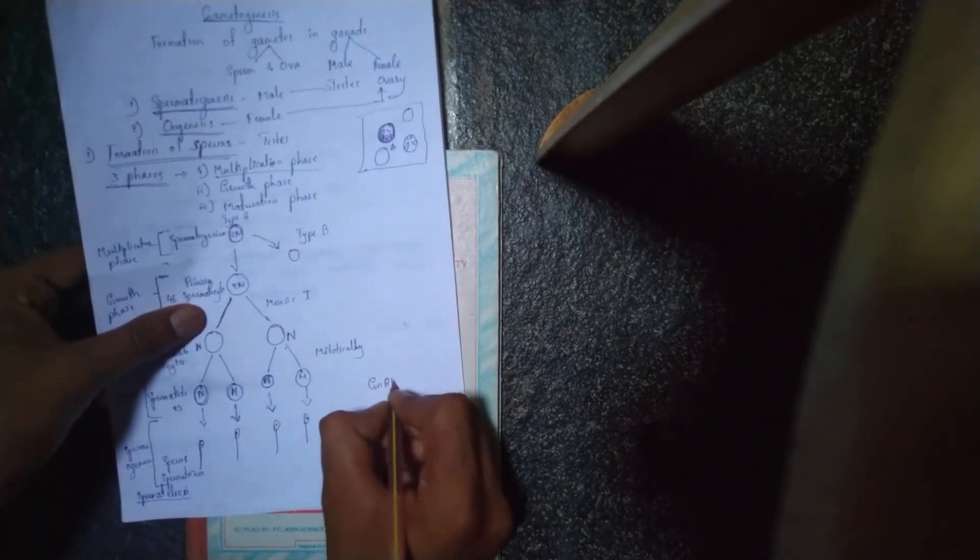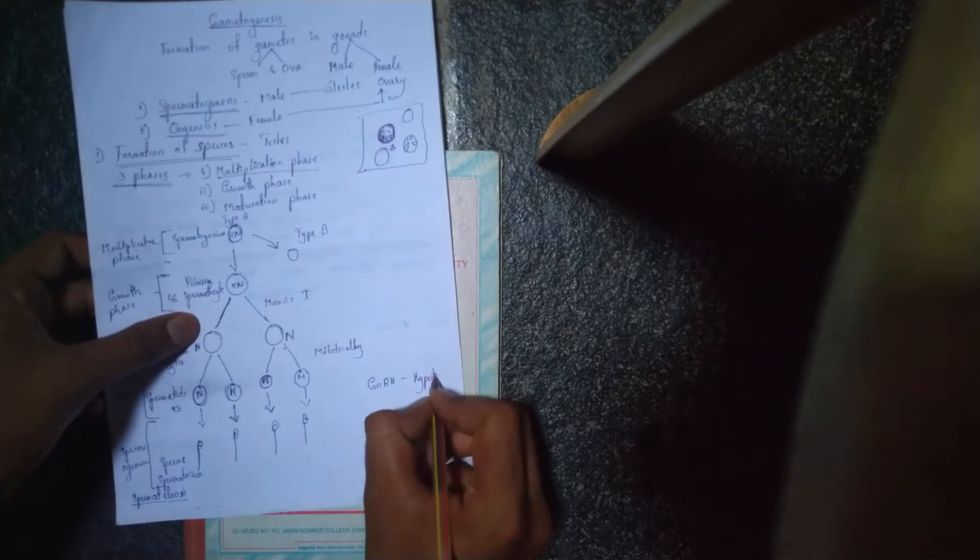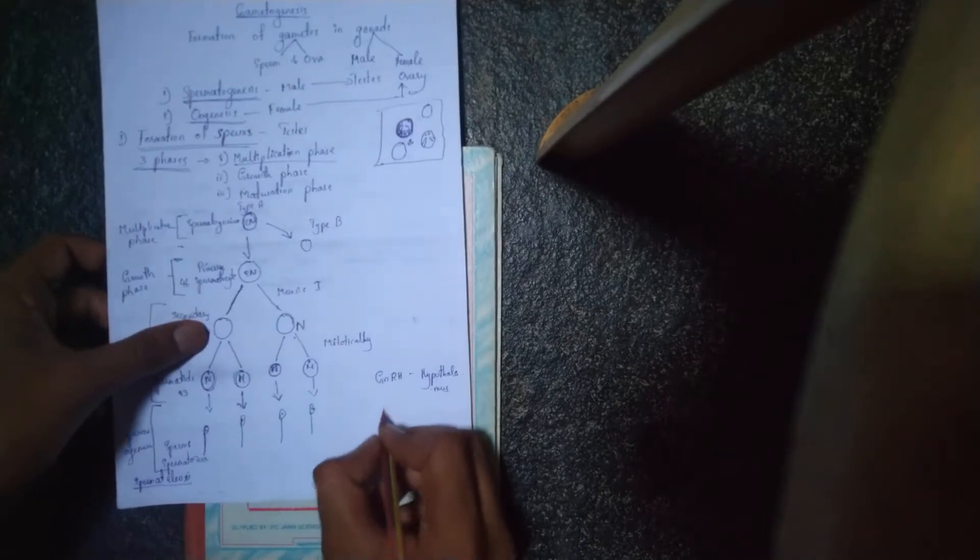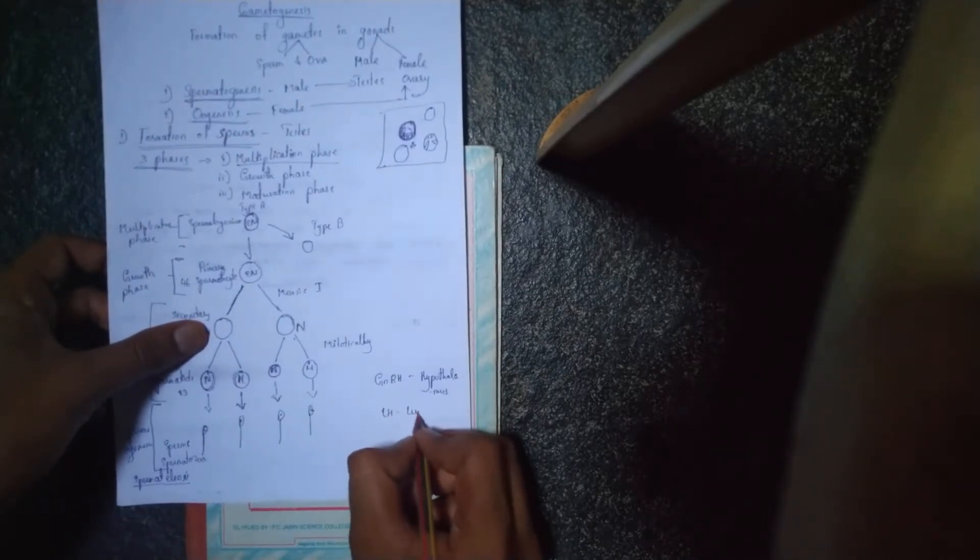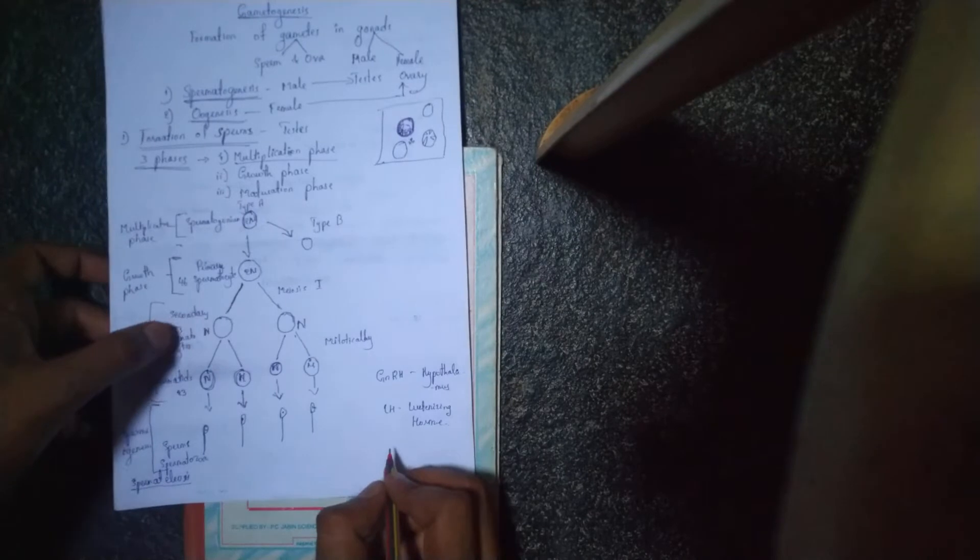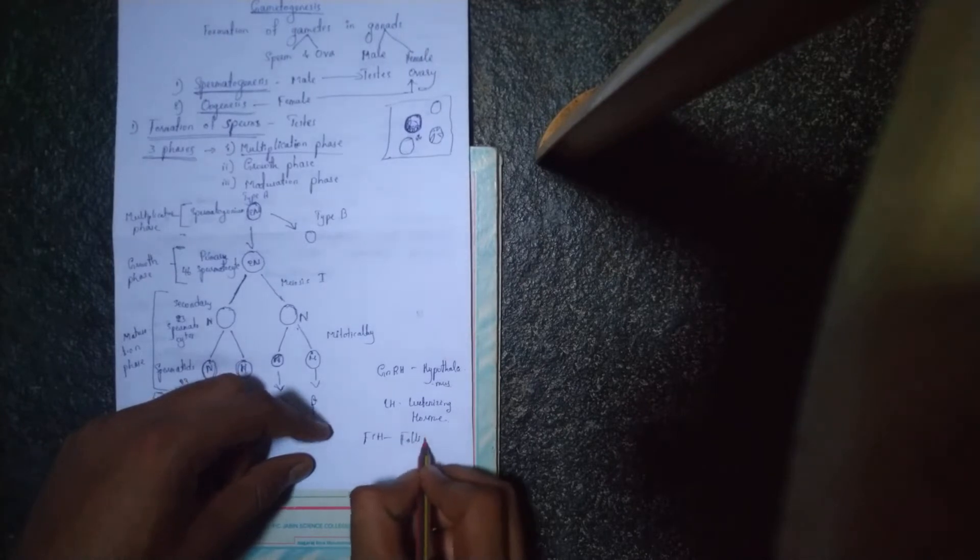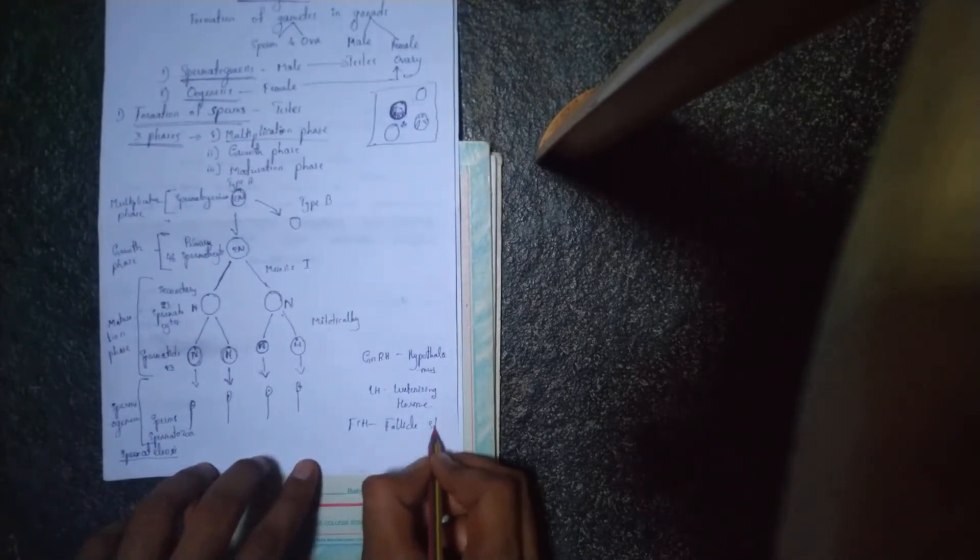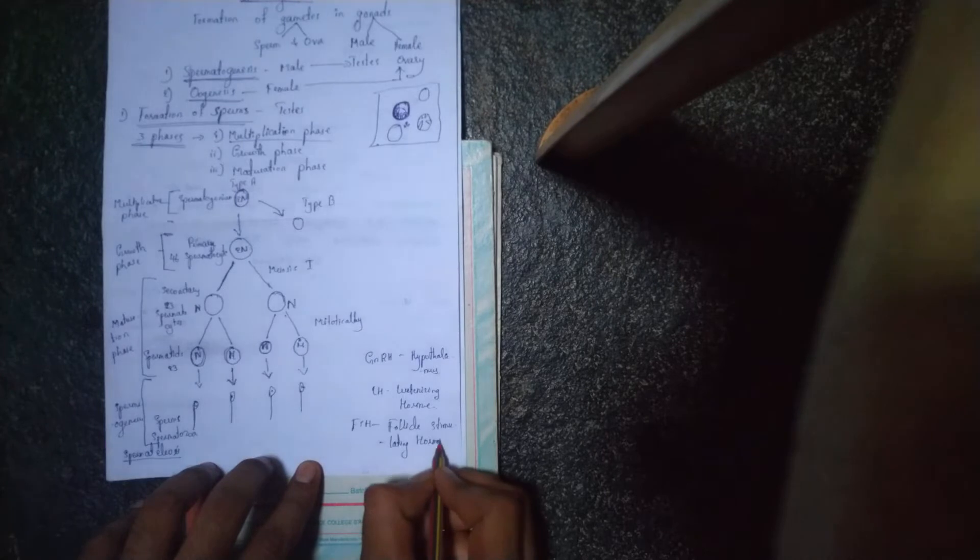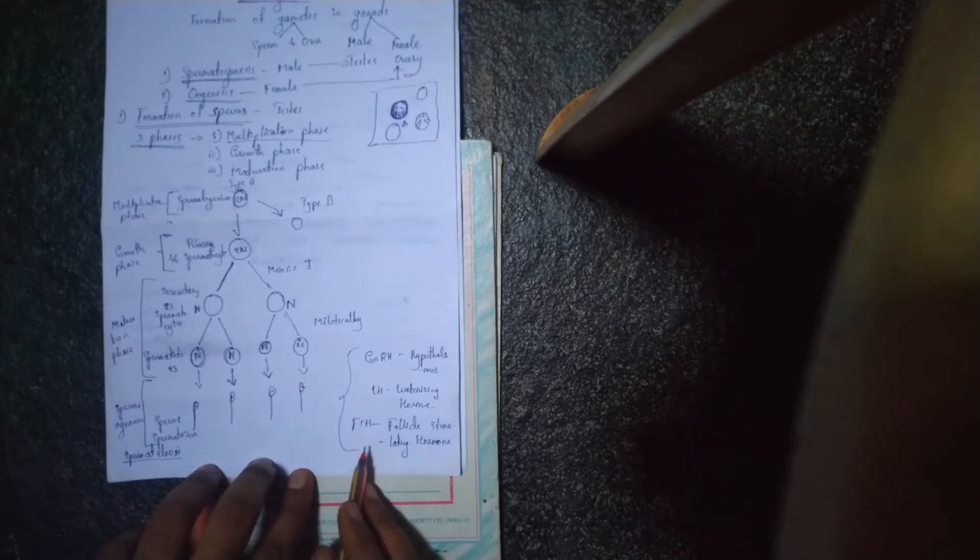These hormones are called GNRH, gonadotropin releasing hormone by the hypothalamus, as well as LH hormone, which means luteinizing hormone, as well as FSH, which means follicle stimulating hormone. These hormones play a very important role in the formation of sperm, which is spermatogenesis.